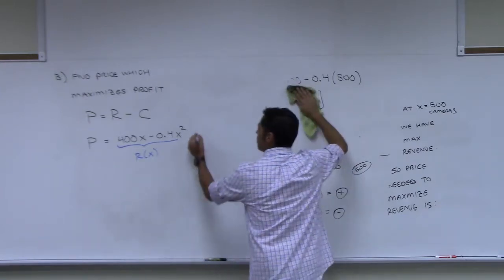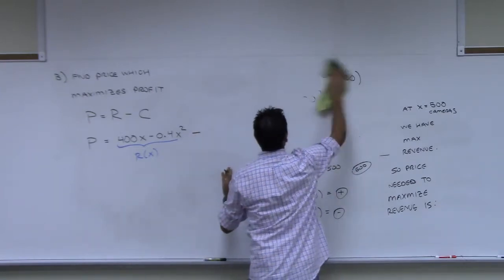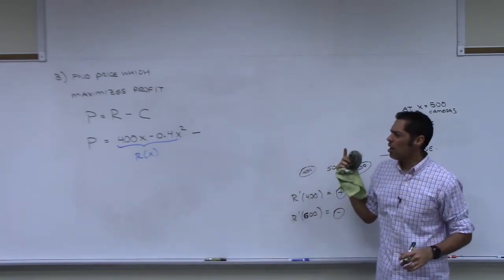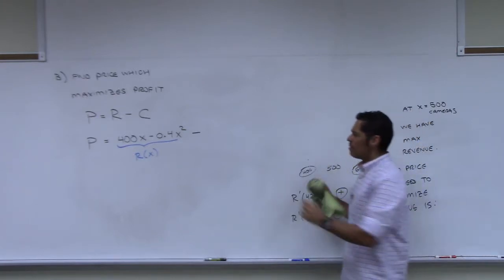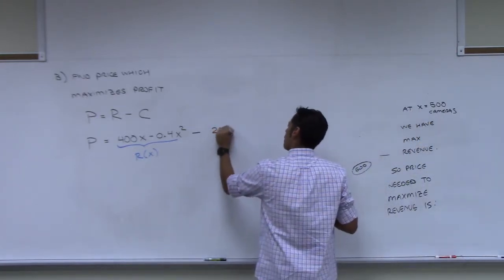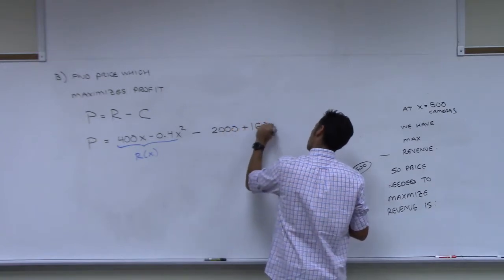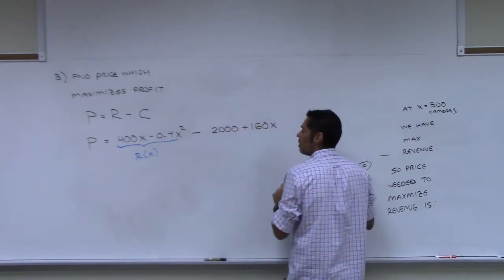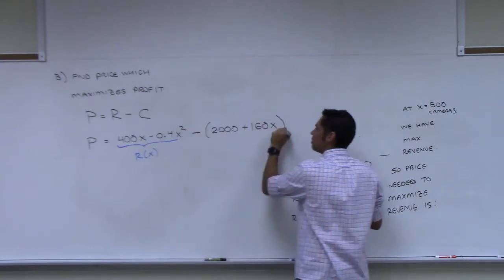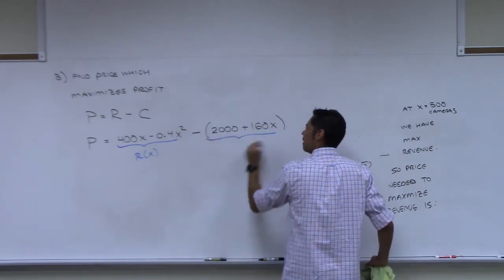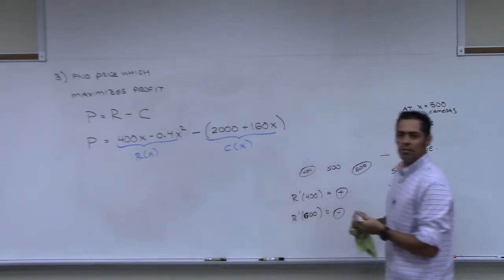Now I need to subtract from that the cost. Now do we know the cost? Yeah, I gave that to you earlier. What was the cost? 2,000 plus 160x, right? Now I need this in parentheses. Why do I need that in parentheses? I have to distribute that negative sign through.